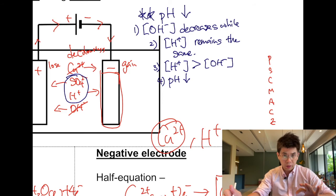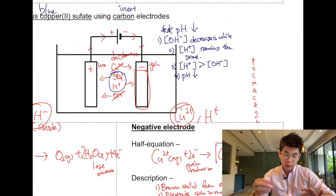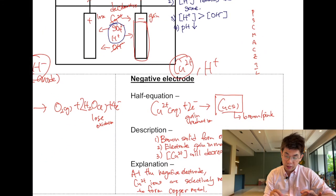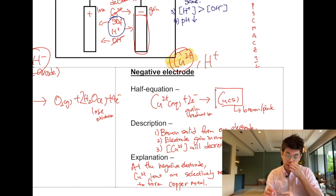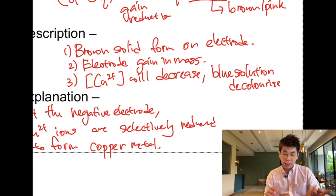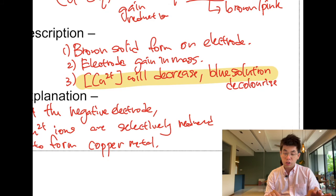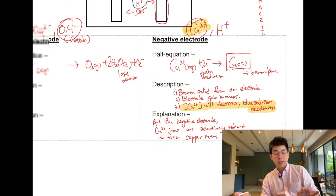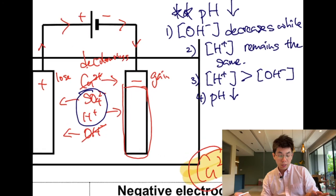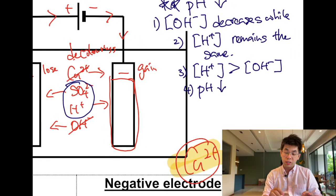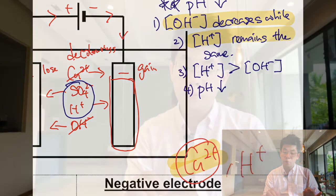So to summarize: first, Cu²⁺ is selected at the cathode. Because Cu²⁺ concentration decreases, the blue solution decolorizes. Also, because OH− concentration decreases but H+ remains the same, the solution becomes acidic at the end. Practice — all the best!